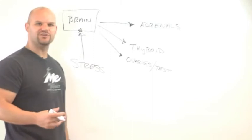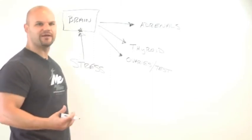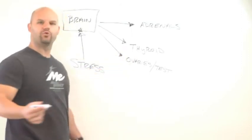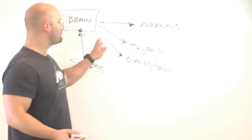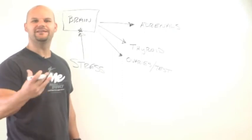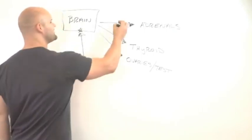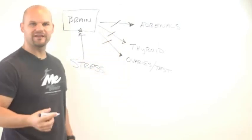However, when this continues and the irritation builds up, now the communication system between the adrenals, between the thyroid gland, and between the ovaries and brain become dysfunctional, become damaged. The communication system gets broken. It gets severed.